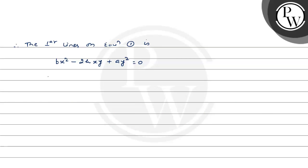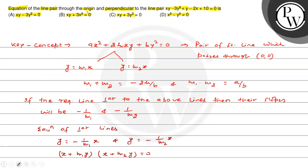b की value है minus 3, 2h = 1 and a = 0. Putting these values in bx square minus 2hxy plus ay square = 0: minus 3x square minus xy + 0 = 0. Taking minus as common, we get the combined equation of the line which is perpendicular to the given line: 3x square plus xy = 0. The most appropriate option is option b: 3x square plus xy = 0. Hope you understood it well, best of luck.